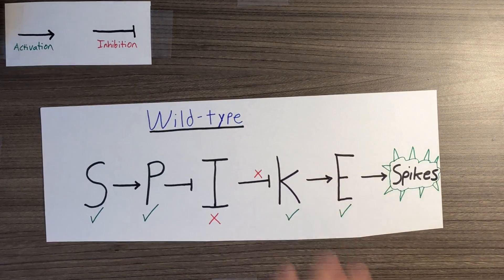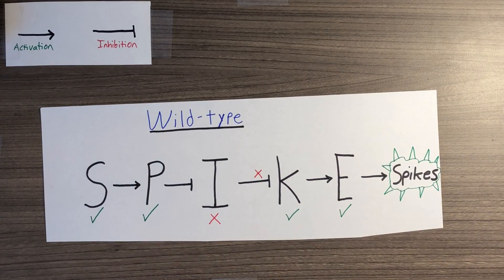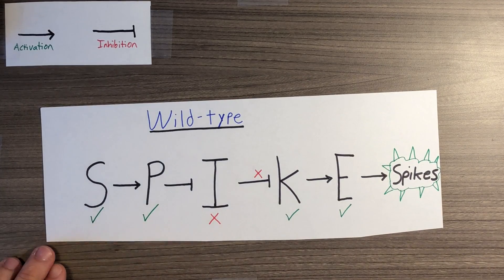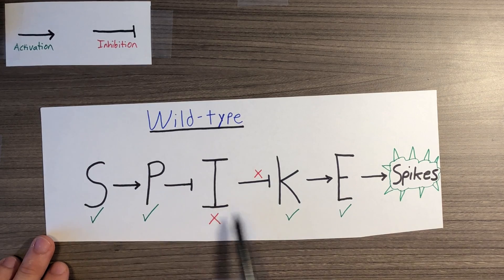There are five genes in this developmental network that will determine whether or not the thorny dragon skin cells will produce spikes: S, P, I, K, and E genes.